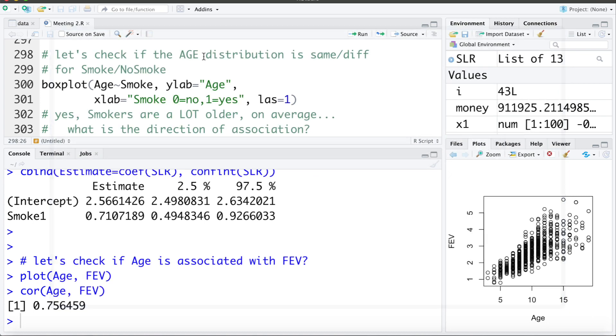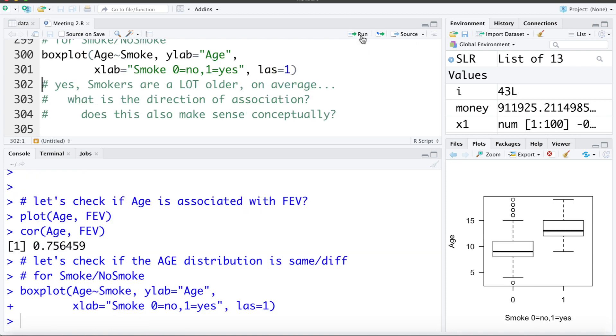The first thing we can do is check if the age distribution seems to be similar or different for smokers and non-smokers. In other words, is there an association between age and smoking? To visually examine this we can look at a box plot. And here we can see that the smokers are much older on average than the non-smokers. So there does appear to be an association.